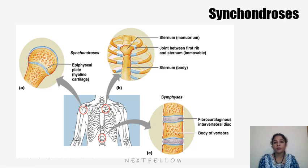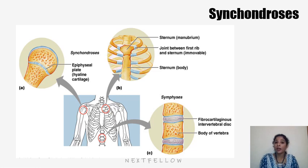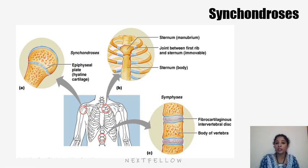Primary cartilaginous joints are otherwise called synchondrosis — 'chondro' means cartilage, 'syn' means fusion — so the two bones are connected by cartilage. They are united mainly by hyaline cartilage, permit negligible movement, but aid in growth in length. A primary cartilaginous joint is where bone and hyaline cartilage meet.